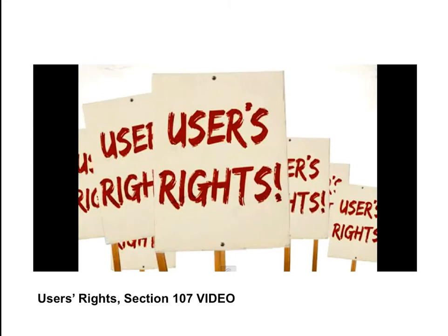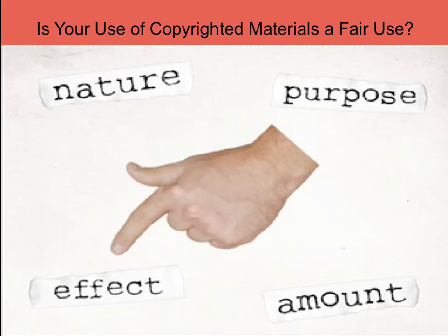We're going to ask you to watch a music video called 'Users Write Section 107,' a great Schoolhouse Rock-style illustration of users having rights within copyright and fair use. As you watch it, it will bring up important questions you must ask when considering the use of copyrighted material in the classroom. Rather than using charts and checklists, educators need to really analyze — in the spirit of critical thinking — whether their use of copyrighted material is a fair use. The law specifies four factors: the nature of the work, the purpose, the effect on the market, and the amount used.